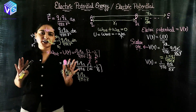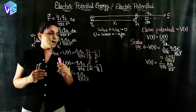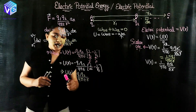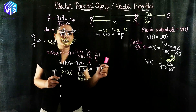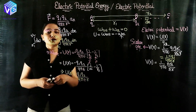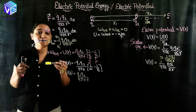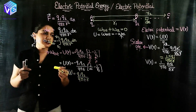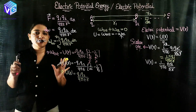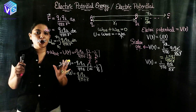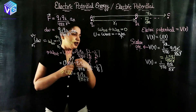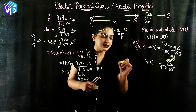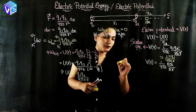I hope now you understand these things and there is no confusion about V(r) and U(r) and the relationship between them. Now we will see the relationship between V(r) and the electric field intensity, which was discussed in the previous video.